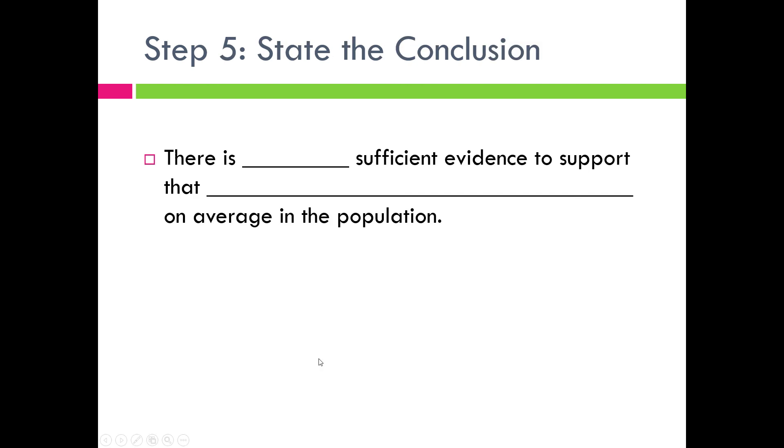Once we make our decision regarding our null hypothesis, we're going to state some sort of conclusion. I like using kind of generic canned statements where you just fill in the blanks just to make things a little bit easier. Obviously, it can be a little bit more elaborate than this. But when I write my conclusion in class or in examples, I'm going to say there is or there is not sufficient evidence to support that. The big blank right there that you see after the that, I'm going to usually use that to represent H sub A. Typically, our claim about a population parameter is regarding H sub A, not all the time, but we want to state something about that and be specific about it. What does H sub A really represent? And then we're going to finish with on average in the population, just to get at the idea that we're making an inference about the population.